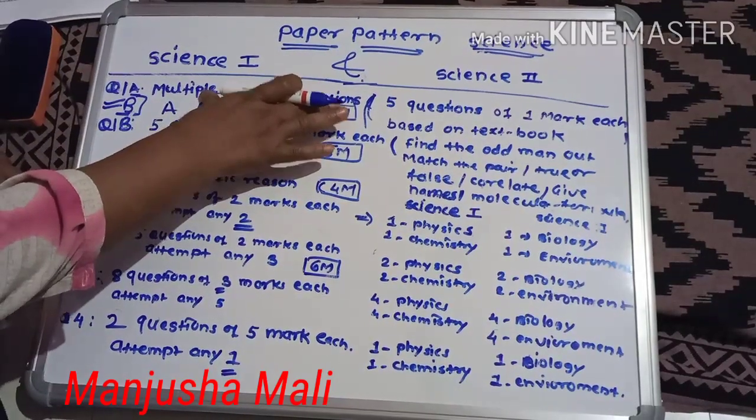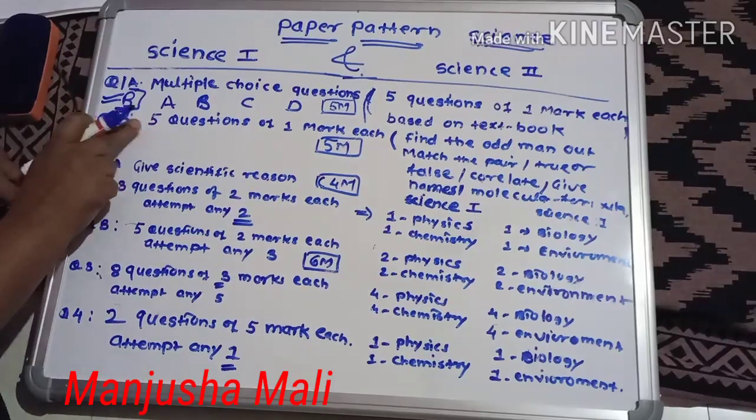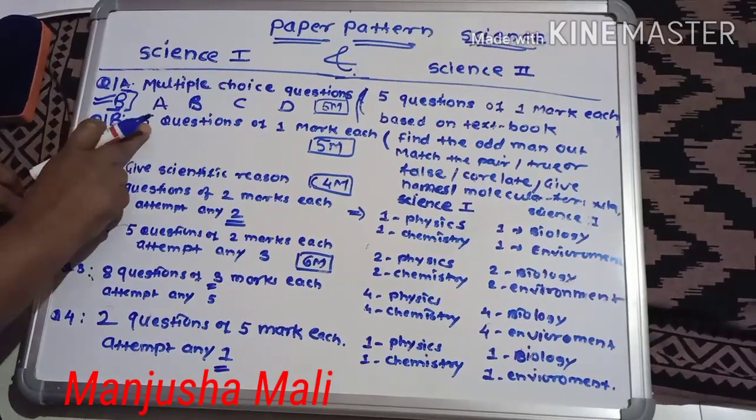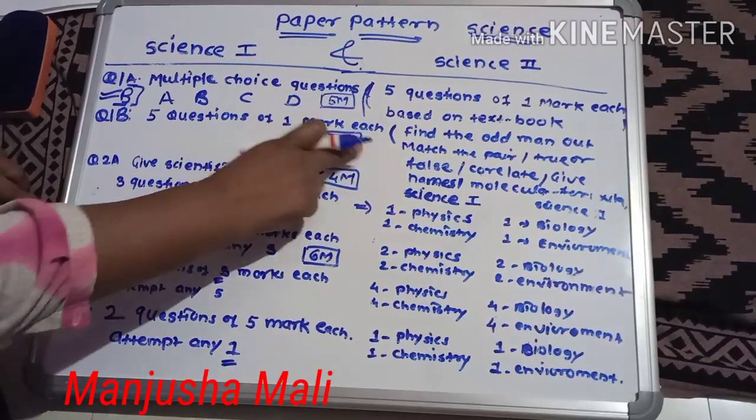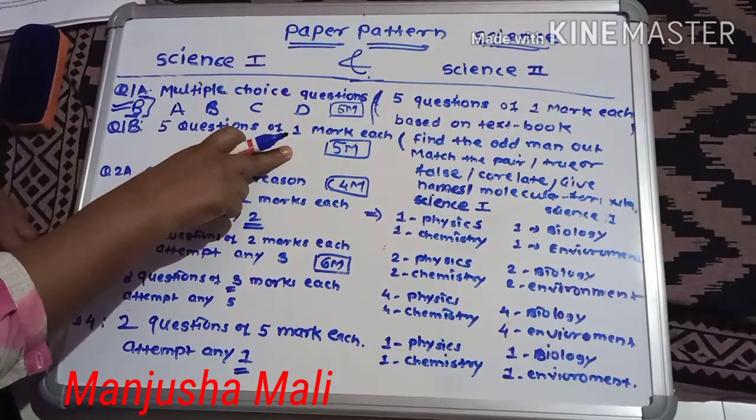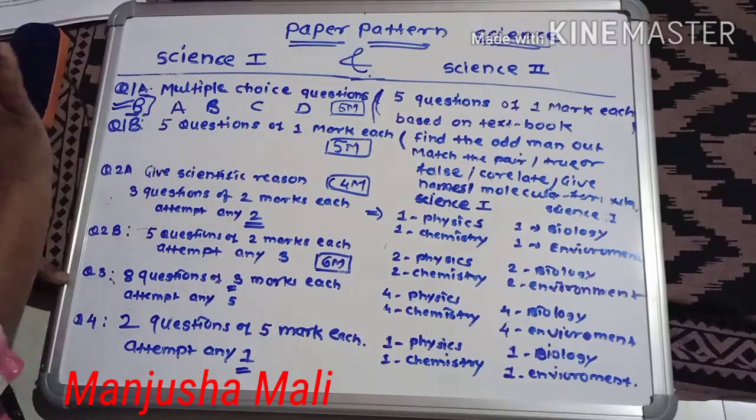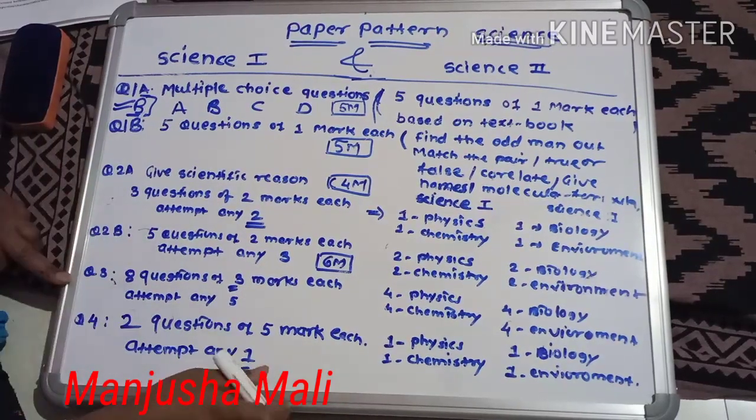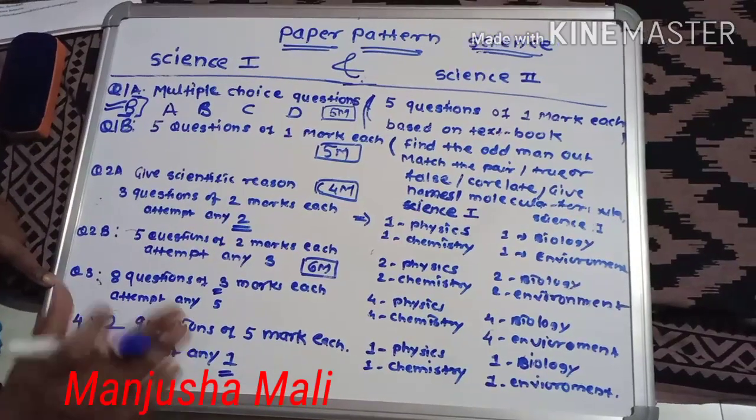This question is common for science 1 and science 2. Then question number 1B, there will be five questions of one mark each. The exception is that there will be no question on the textbook. You will have to fill in the blanks or select the appropriate answer.